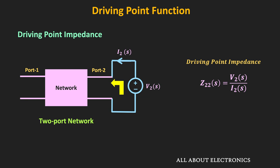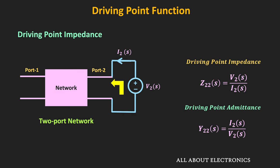If the input is applied at port 2, then the driving point impedance at port 2, Z22, is given by V2 divided by I2, where V2 and I2 are the voltage and current at port 2. Similarly, the driving point admittance at port 2, Y22, is the inverse of the impedance — that is, Y22 equals I2 divided by V2. So if we know the voltage and current at a specific port, we can easily find the driving point impedance or admittance of the network.